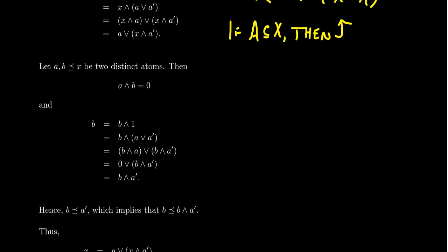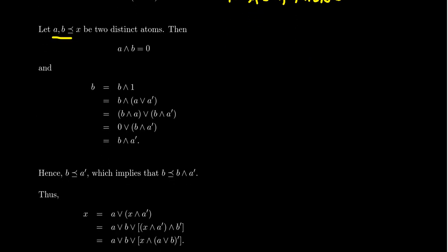Next, suppose we have two distinct atoms A and B that both belong to an element X. Clearly, since they're distinct atoms, A meet B must equal zero. For an atom, the only things smaller than A are A and zero, and similarly for B. So the greatest lower bound of two distinct atoms must be zero. The intersection of distinct atoms is always equal to zero.